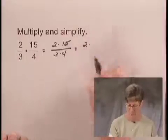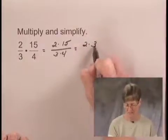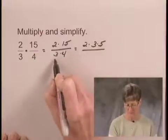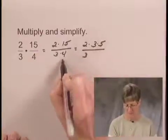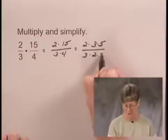2 is a prime number, and I can write 15 as 3 times 5. 3 is a prime number in the denominator, and I can write 4 as 2 times 2.